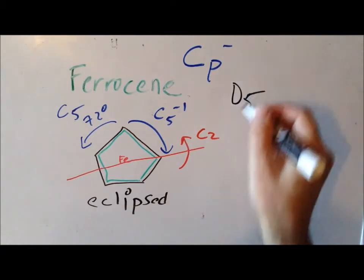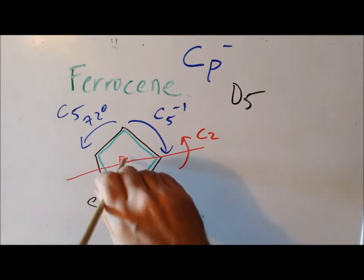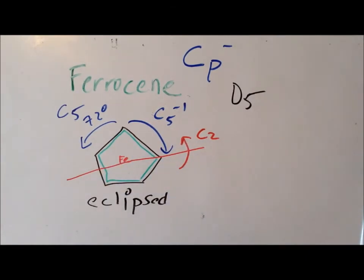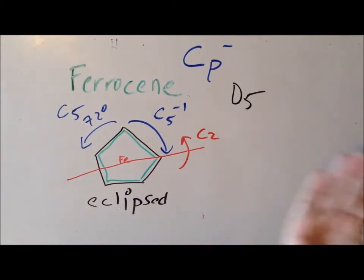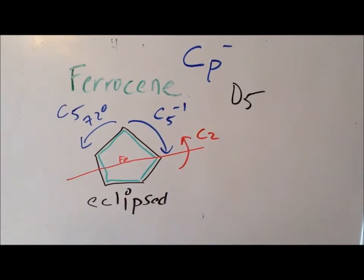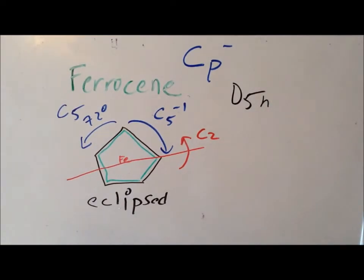To finish the classification, we look for a mirror. Since the high-order rotation axis is perpendicular to the whiteboard, a horizontal mirror would lie in the plane of the board — and there is one. It reflects the top ring into the bottom ring, running straight through the iron atom parallel to both Cp rings. This tells us the point group symmetry of eclipsed ferrocene is D5H.